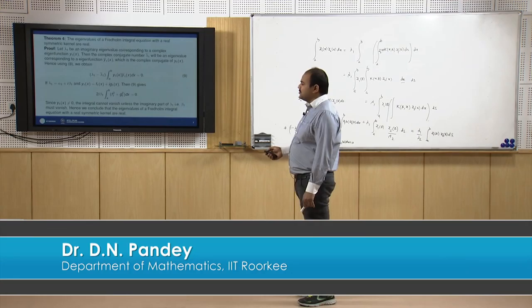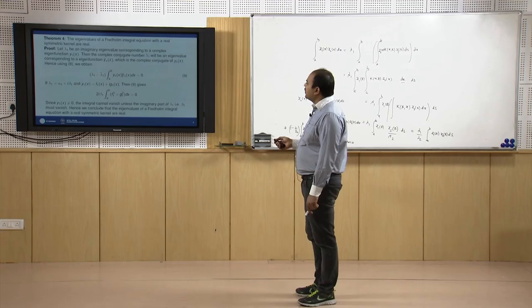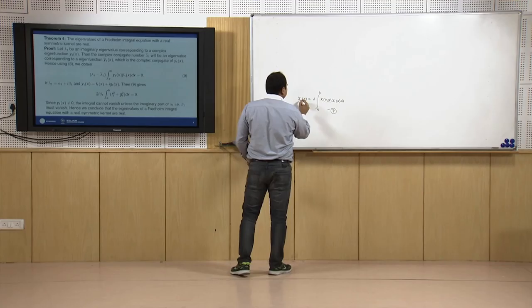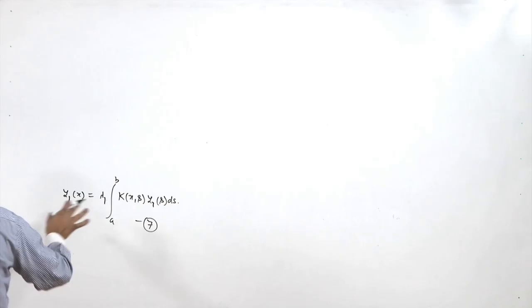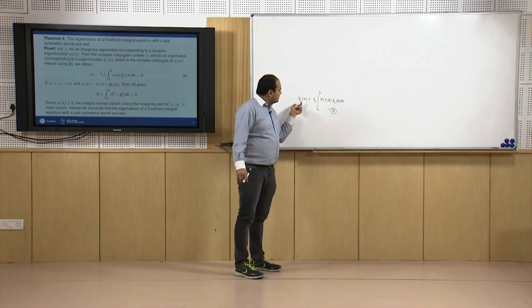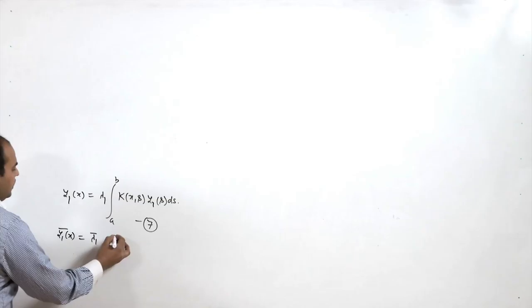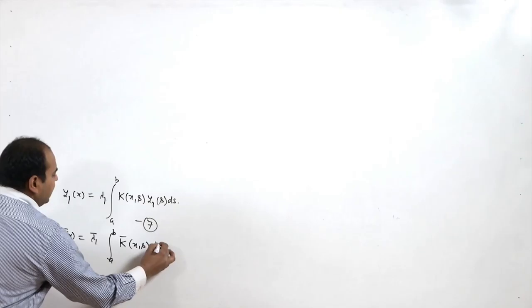To prove this, assume λ₁ is a possibly complex eigenvalue corresponding to a complex eigenfunction y₁(x), so y₁(x) = λ₁ ∫[a to b] k(x,s) y₁(s) ds. Taking the complex conjugate: ȳ₁(x) = λ̄₁ ∫[a to b] k̄(x,s) ȳ₁(s) ds. Since the kernel is real symmetric, k̄(x,s) = k(x,s) = k(s,x).